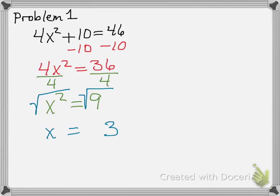But is it just 3? Remember, perfect squares are always positive, so their factors can either be positive or negative. So our answer is x is equal to plus or minus 3.